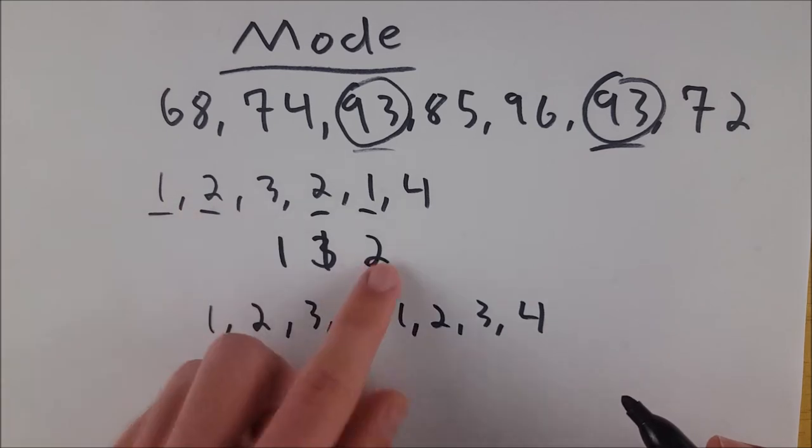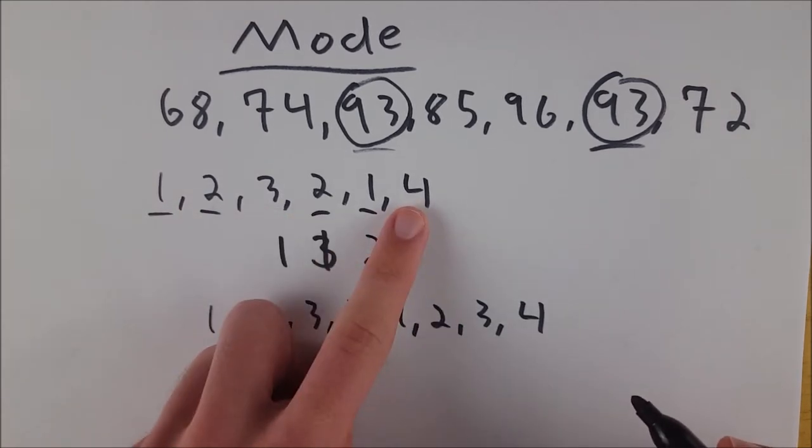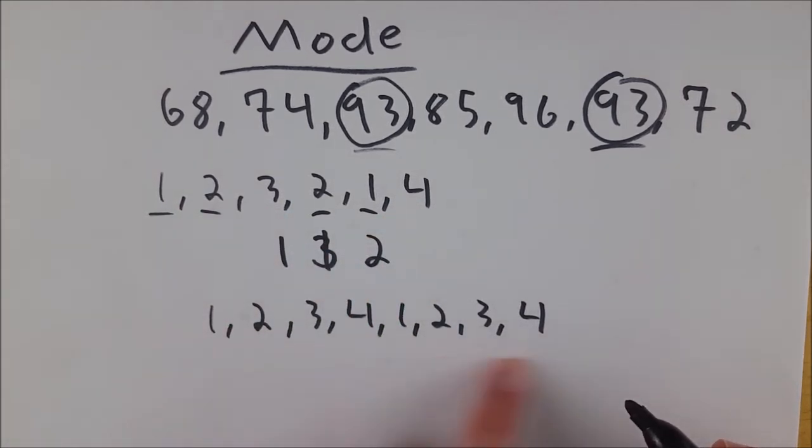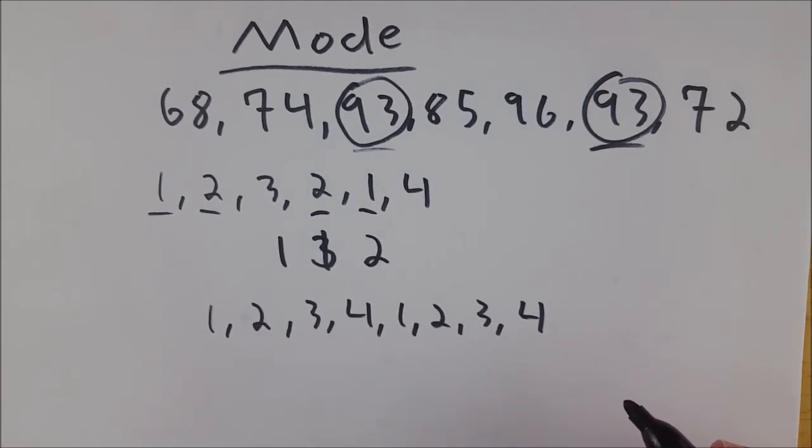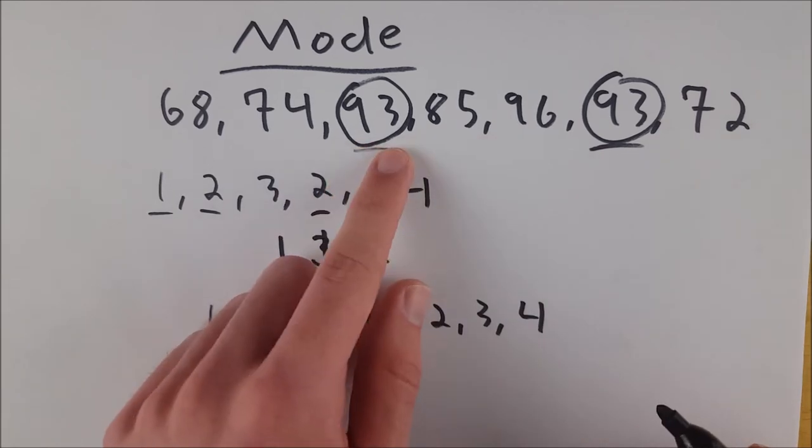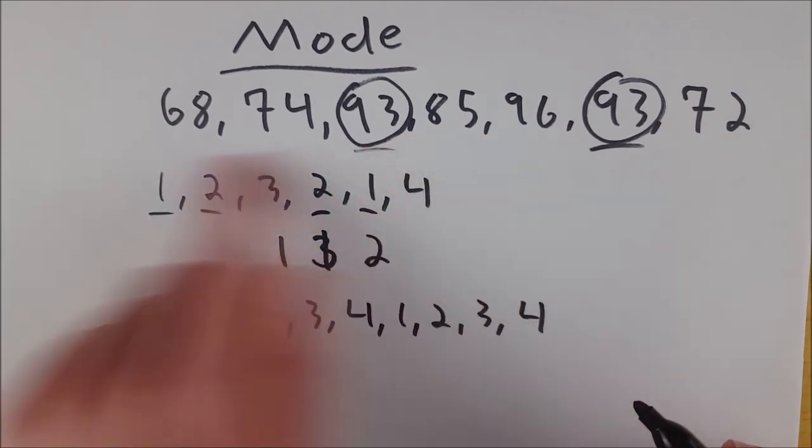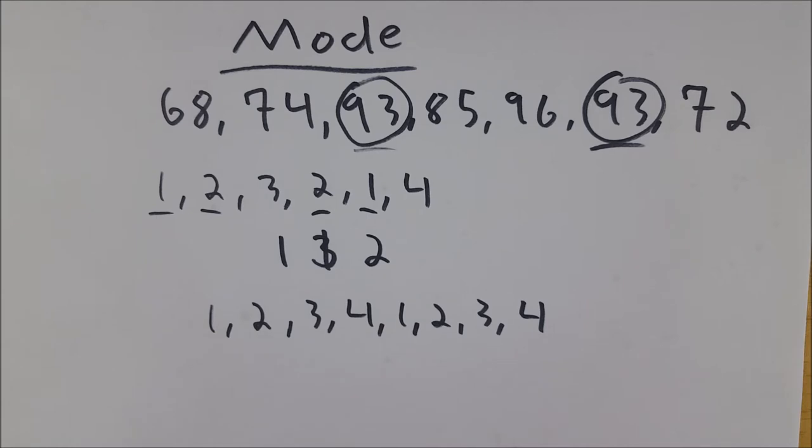So in this example, one and two both appear more than any other number in the set of data. In this set of data, there is no number that appears more than every other number. And in this set of data, 93 appears more than any other number because it appears twice and every other number appears once.